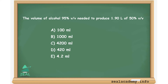Dilution is the addition of solvent, which decreases the concentration of the solute in the solution. Concentration is the removal of solvent, which increases the concentration of the solute in the solution. In both dilution and concentration, the amount of solute stays the same. This gives us a way to calculate what the new solution volume must be for the desired concentration of solute.